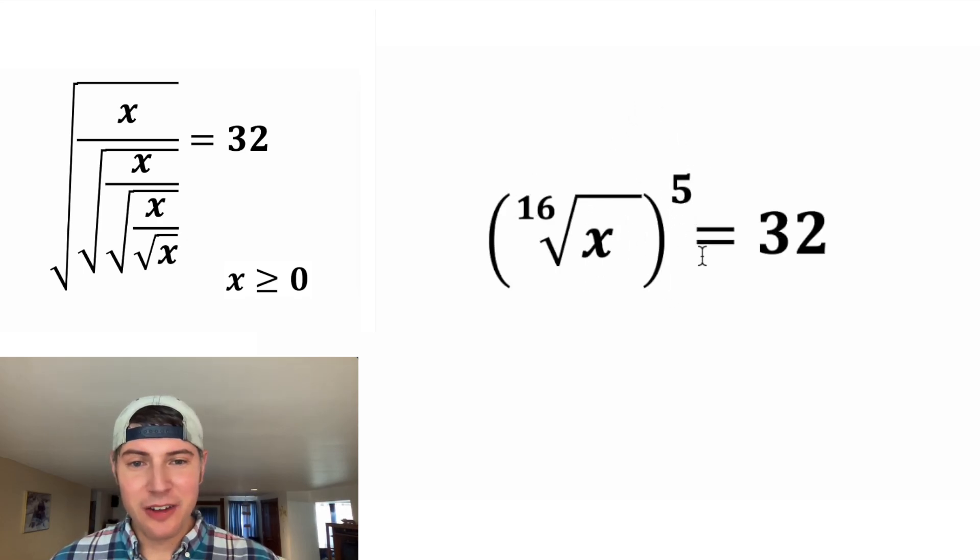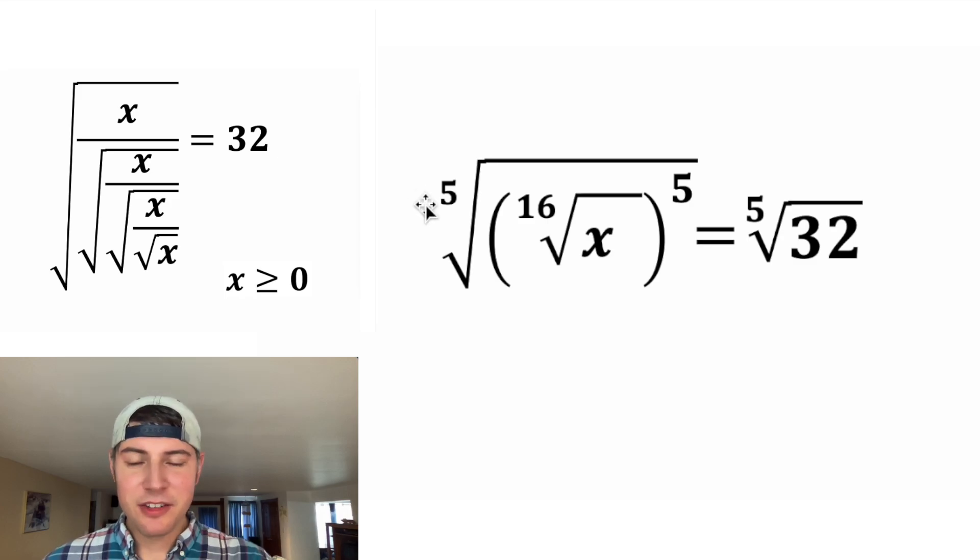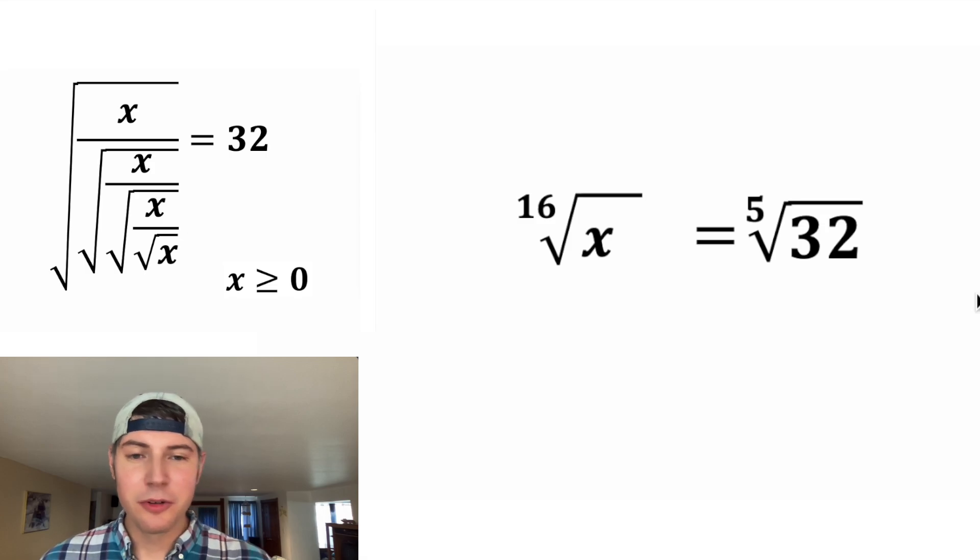And now to get rid of this five, we can take the fifth root of both sides of the equation. This fifth root and this five are going to cancel each other out. And the fifth root of 32 is two.